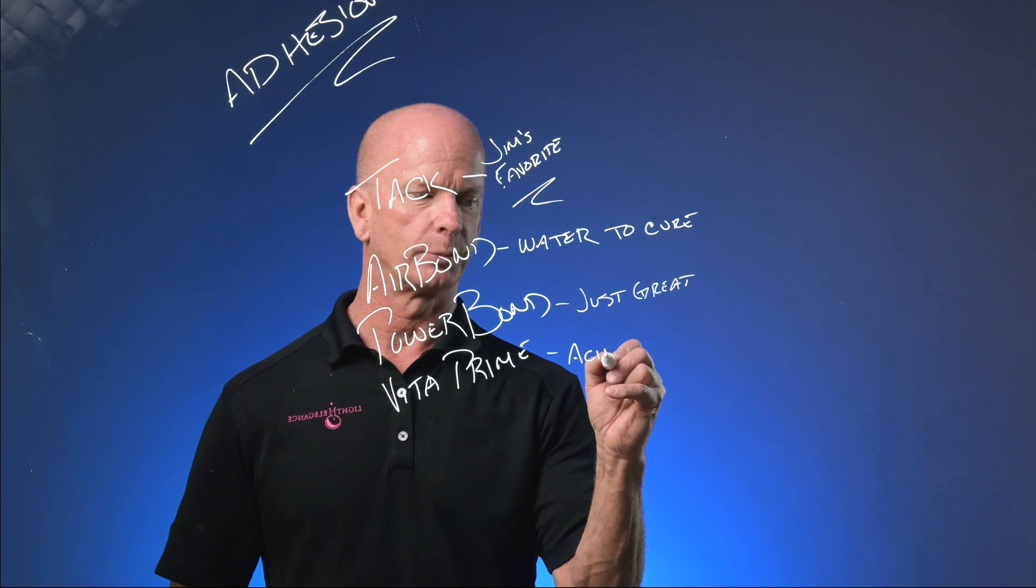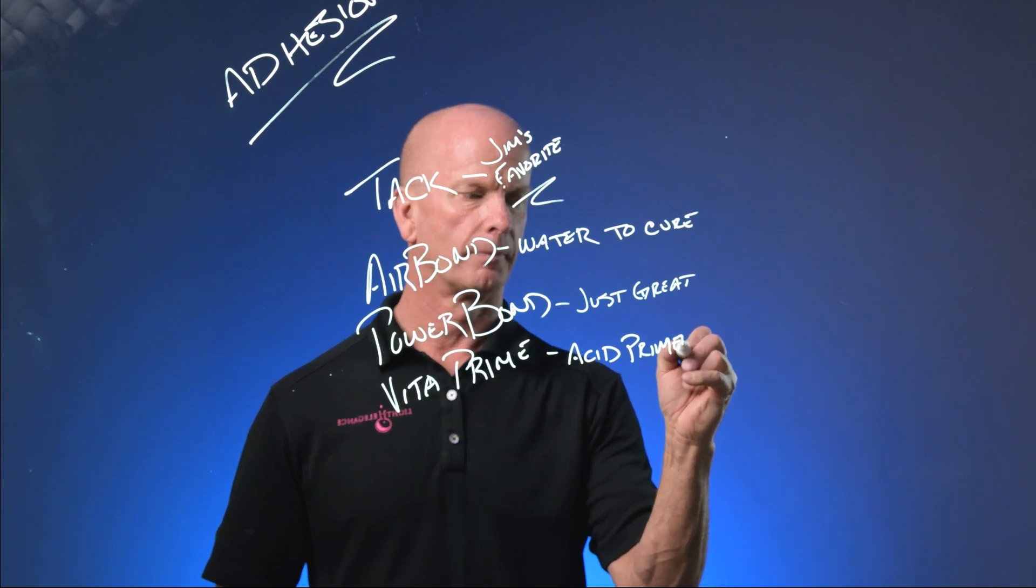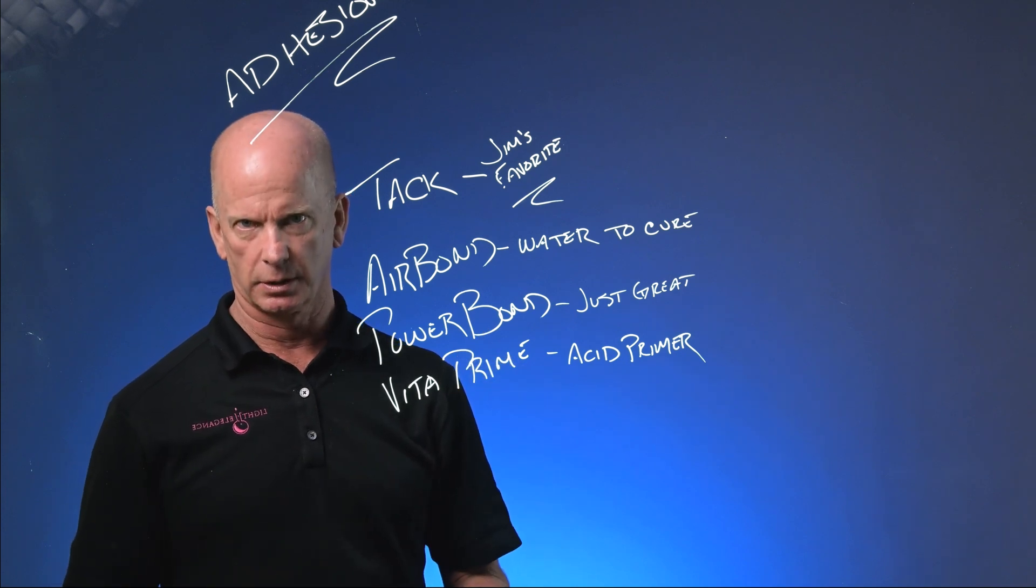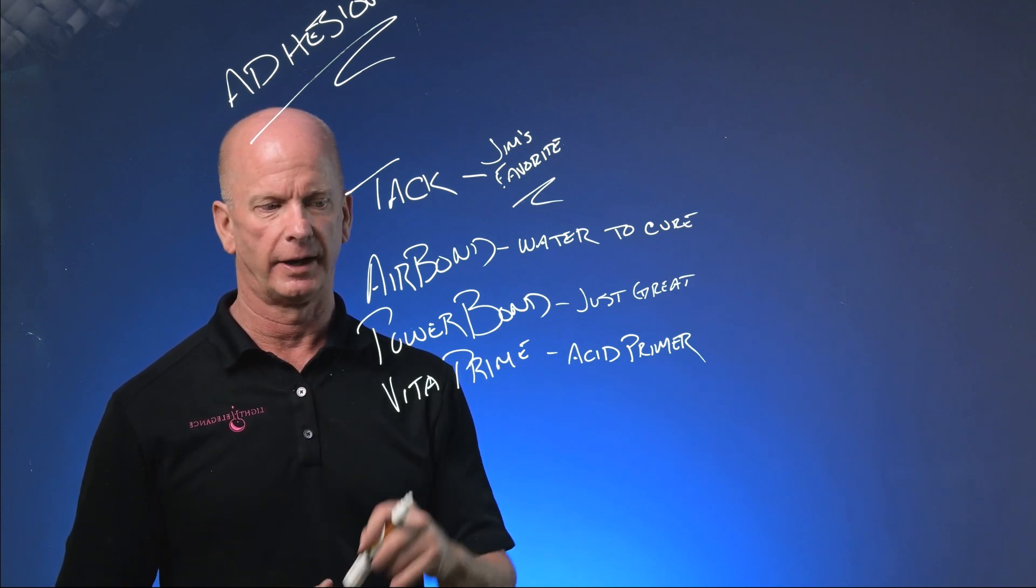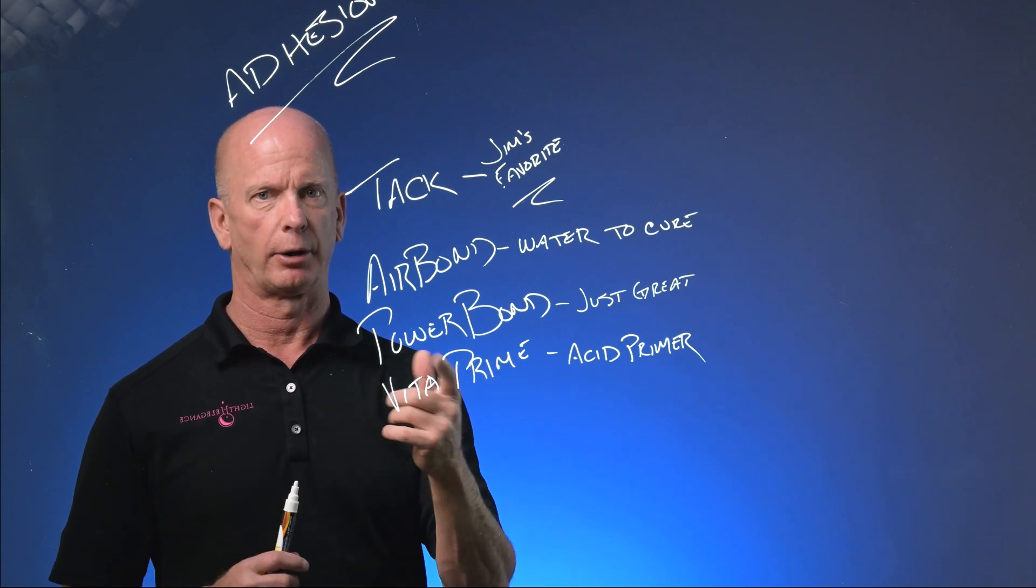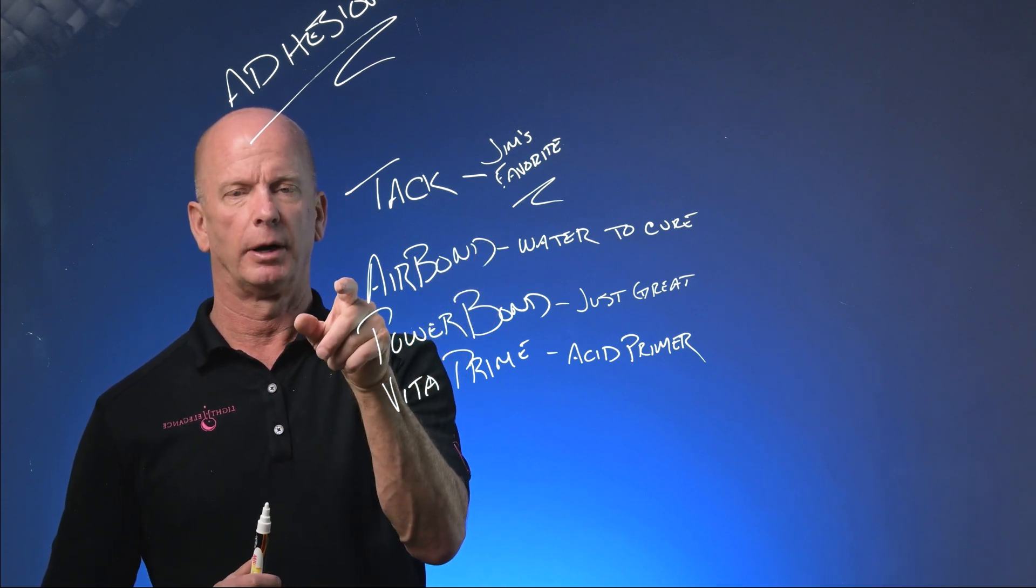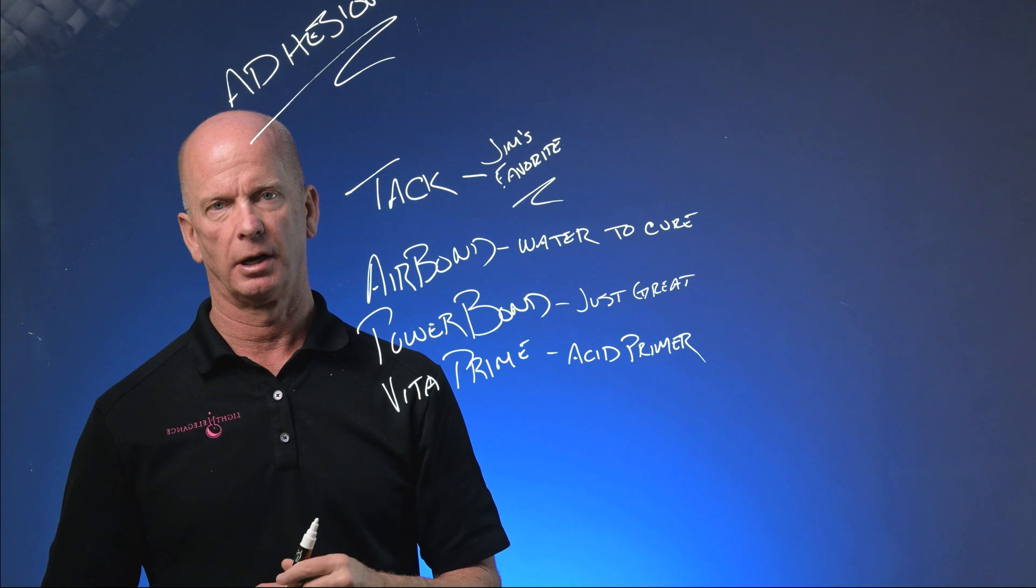Vita Prime is your typical acid-based primer. And I only use it if everything else does not work. Throw a little bit of Vita Prime underneath, say, power bond, or you can put air bond down first and then put Vita Prime on top. Air bond works with the incorporation of acid. There's a little bit of acid in the air bond.